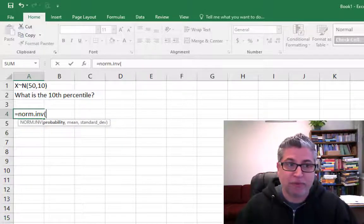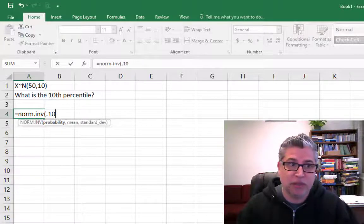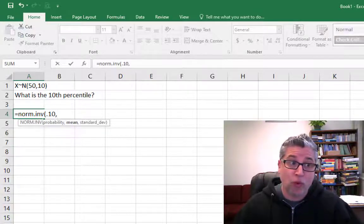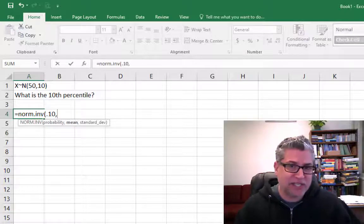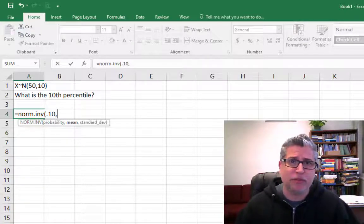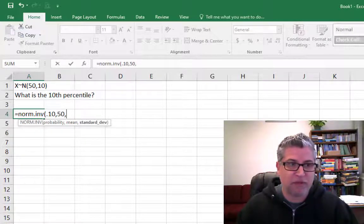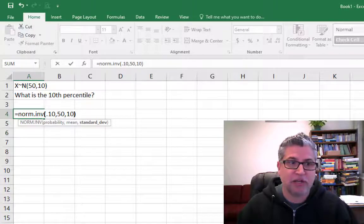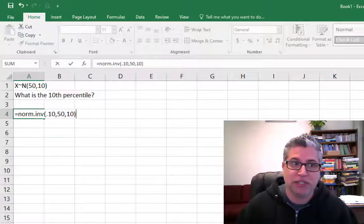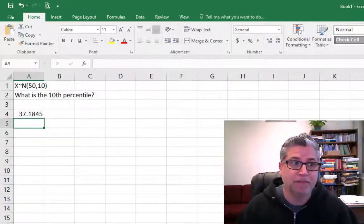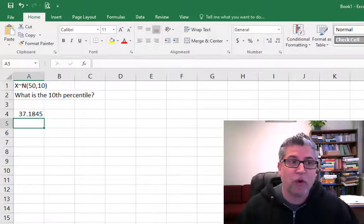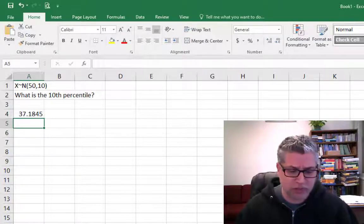So we have to provide the probability. We do that as a decimal. And then you have to tell it where you're sampling from. It's not a standard normal, so you need to provide the two parameters that define the particular normal. So give it the 50 for the mean, 10 for the standard deviation, close your parentheses, and then you're done.